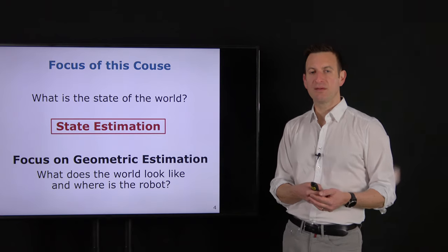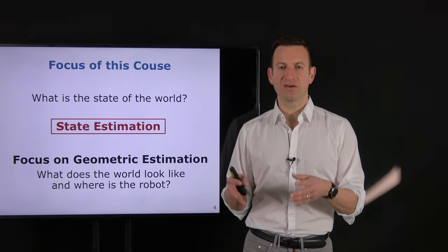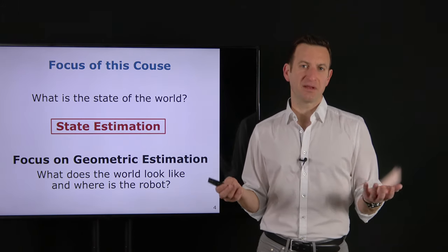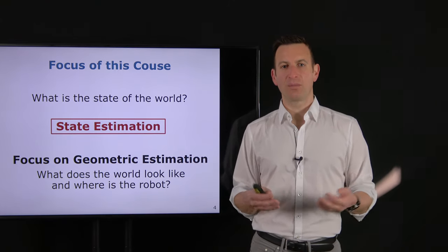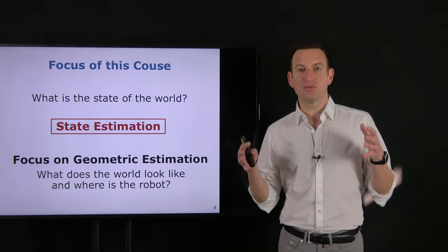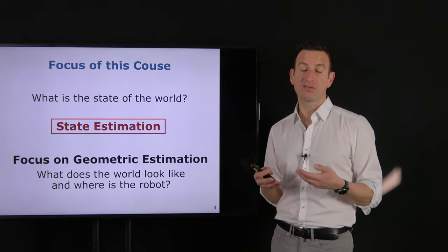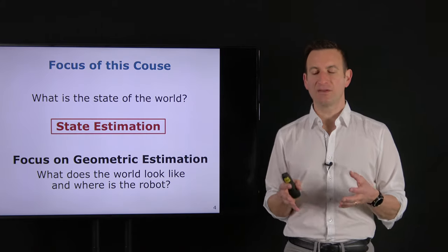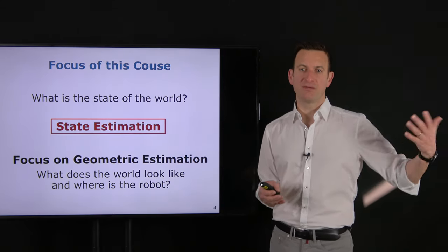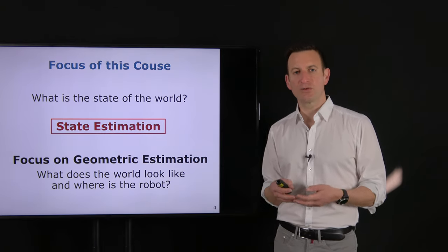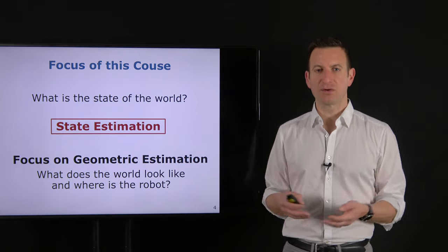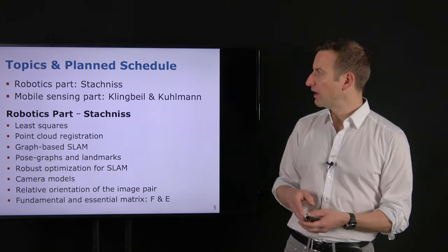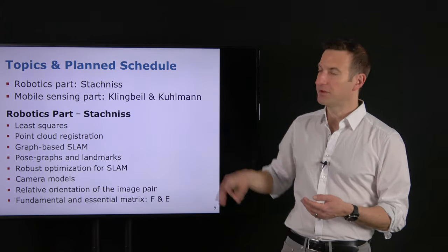We may exploit semantic information occasionally — for example, identifying a human as an element in a range scan we don't want included in point cloud registration. But the main focus is geometry: specifically, what does the world look like and where is the robot in that world — location estimation of the platform and mapping of the environment. This is similar to the mobile sensing part taught by Lasse Klingbeil, where action selection and semantic information also play a minor role.